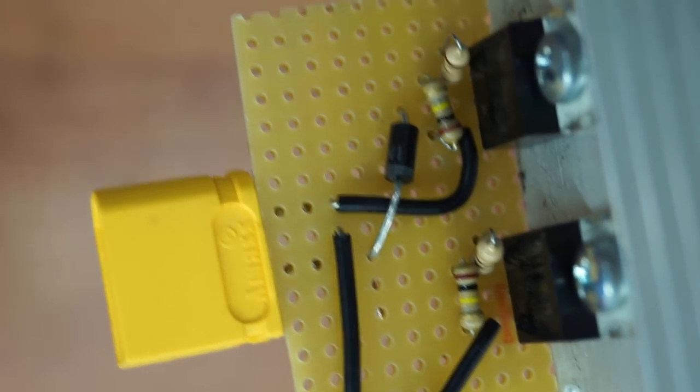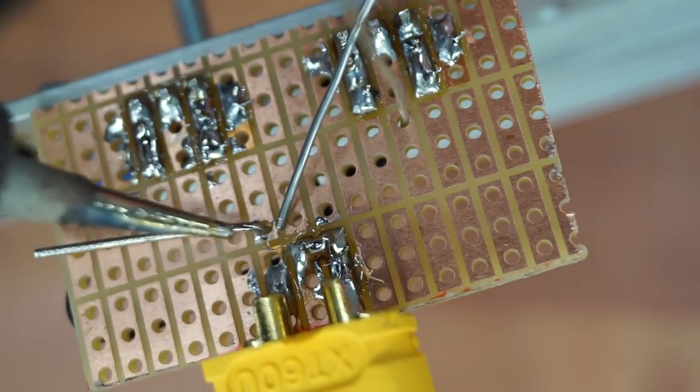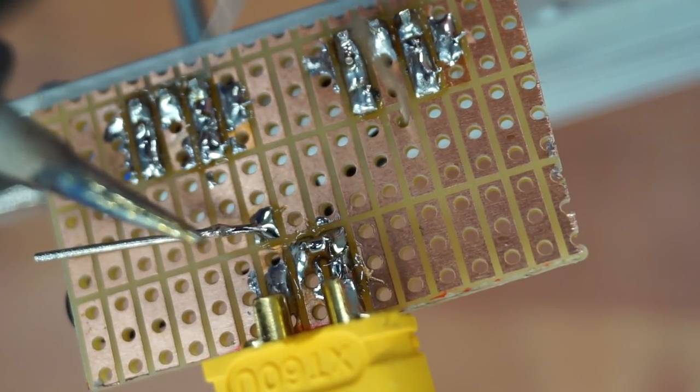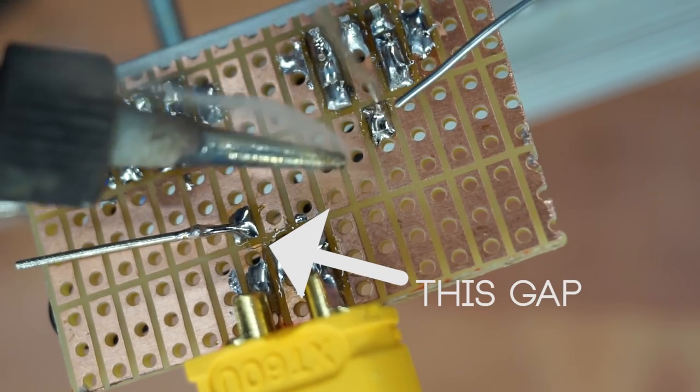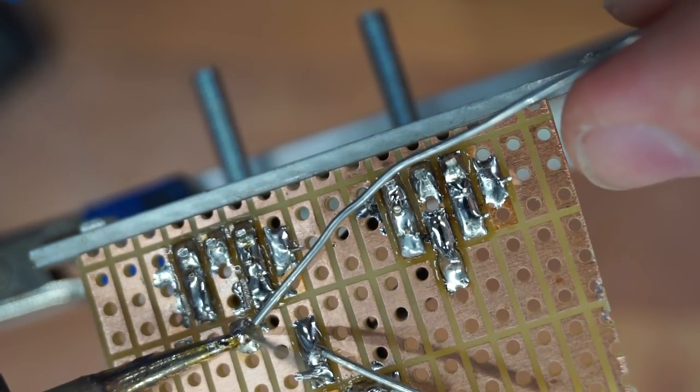Then I connected the flyback diodes. I have actually made a mistake here, they were supposed to be connected to the positive terminal, but I forgot to bridge the gap. And later on my first try, I fried the MOSFETs and had to replace them just because of this.